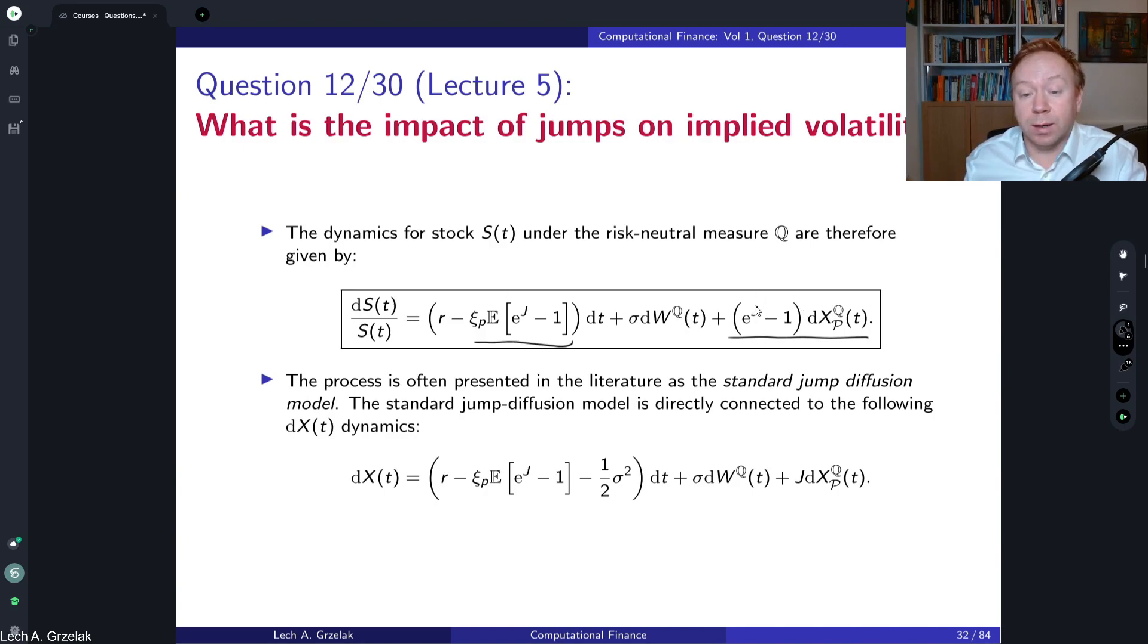This will be telling us how the continuous paths from Brownian motion start jumping. We also notice there is some kind of deterministic component in the drift, and this deterministic component comes from the compensation, so it's a martingale compensator from the Poisson process, a compensated Poisson process. The details for the relation how to derive this expectation of e^j minus one you will find in lecture number five.